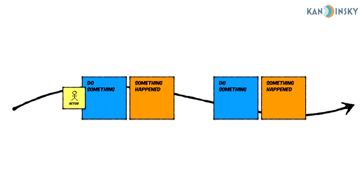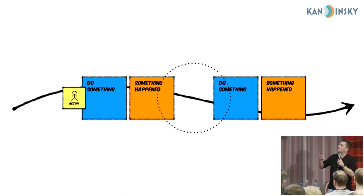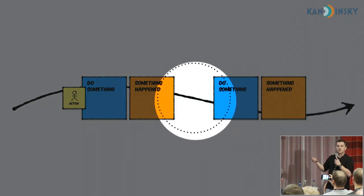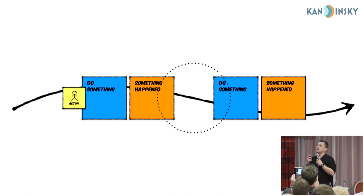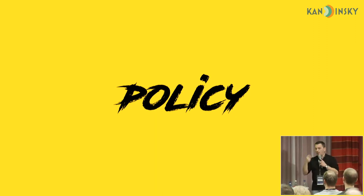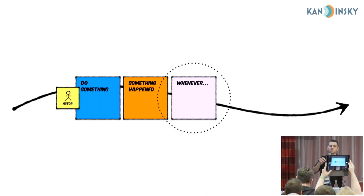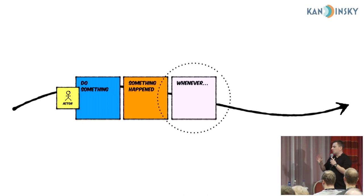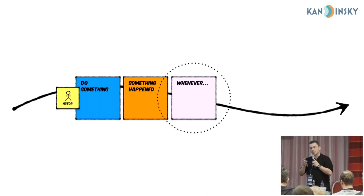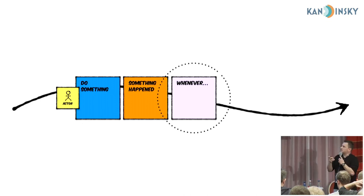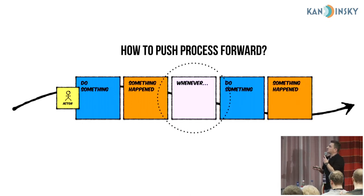The second interesting thing: if we've got a chain of command, event, command, event, there is probably a missing element — what is between one event and the next command? If the first command was triggered by a user action, how was the next command triggered? This is the moment when the concept of policy, introduced by Alberto, shows up. The probability is that there is something between — and this is a policy.